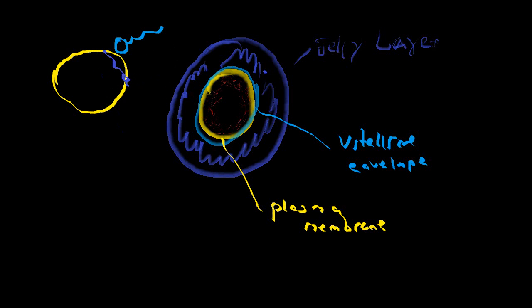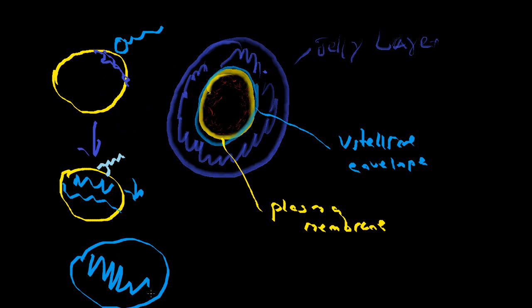The release of calcium begins at the point of contact, and then eventually it starts heading in that direction, and it keeps going until it actually covers the entirety of the egg, until the egg is depolarized. This decreases the mass quantity of sperm that go towards the egg, so it does serve a rather important role in preventing polyspermy.